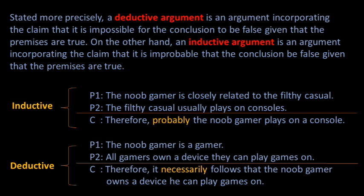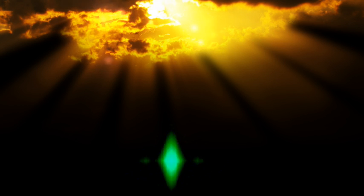So here are two examples. First: the noob gamer is closely related to the filthy casual; the filthy casual usually plays on consoles; therefore, probably the noob gamer plays on a console. Second: the noob gamer is a gamer; all gamers own a device they can play games on; therefore, it necessarily follows that the noob gamer owns a device he can play games on. The first of these two arguments is inductive, the second deductive. In deciding whether an argument is inductive or deductive, we look to certain objective features: the occurrence of special indicator words, the actual strength of the inferential link between premises and conclusion, and the form or style of argumentation.